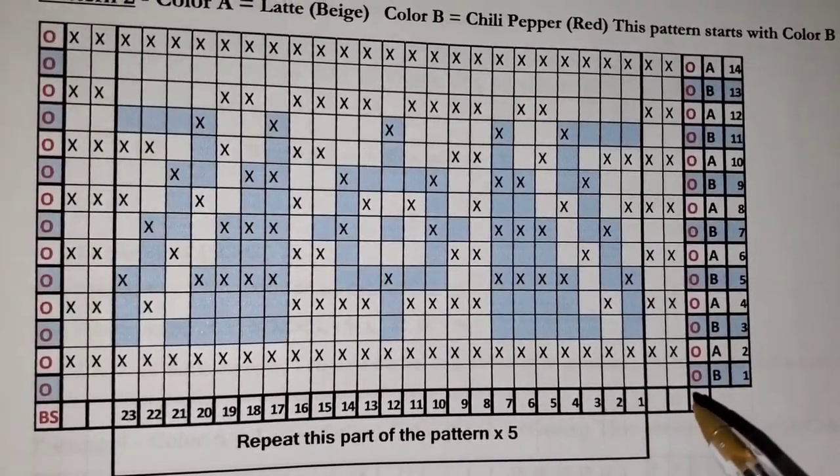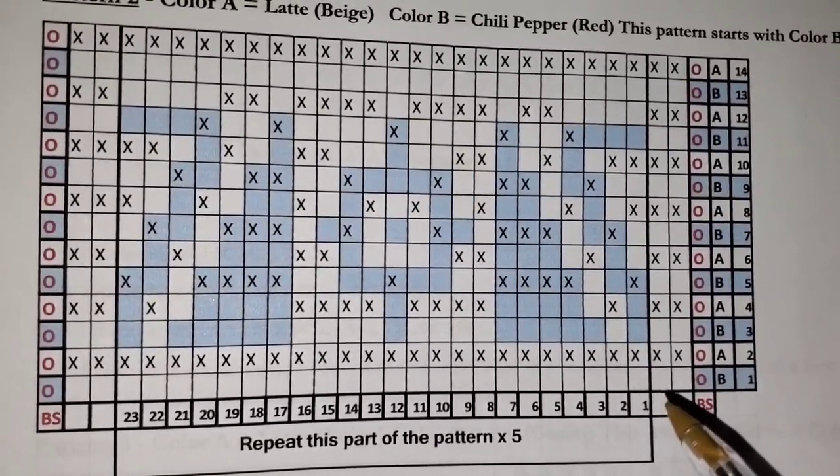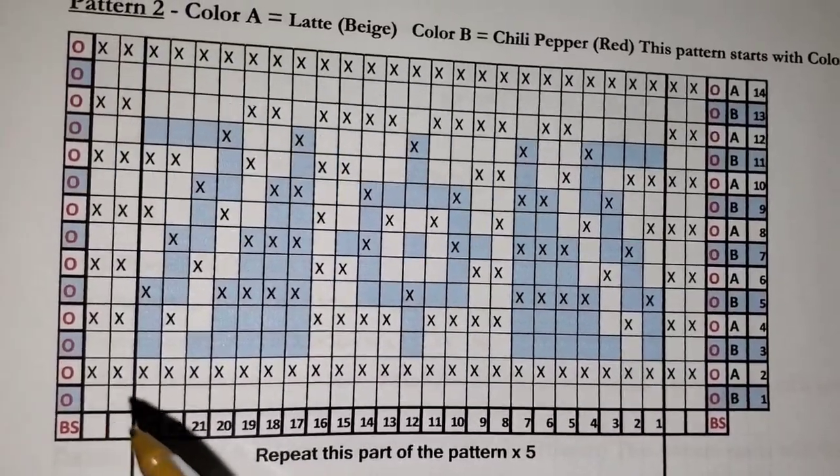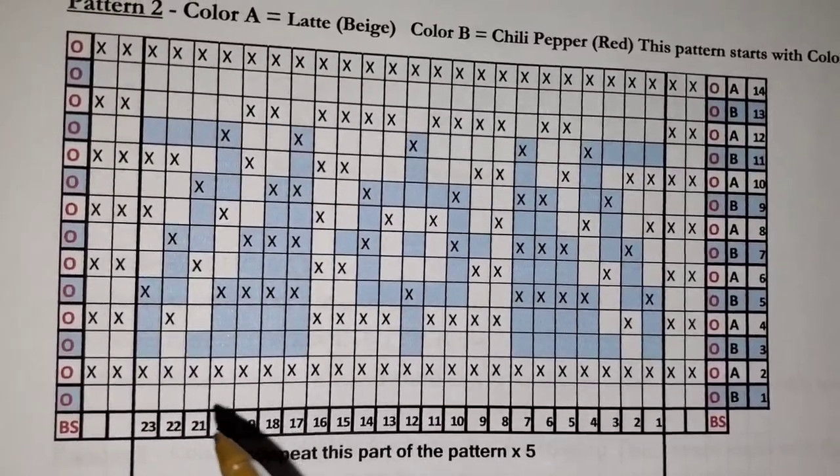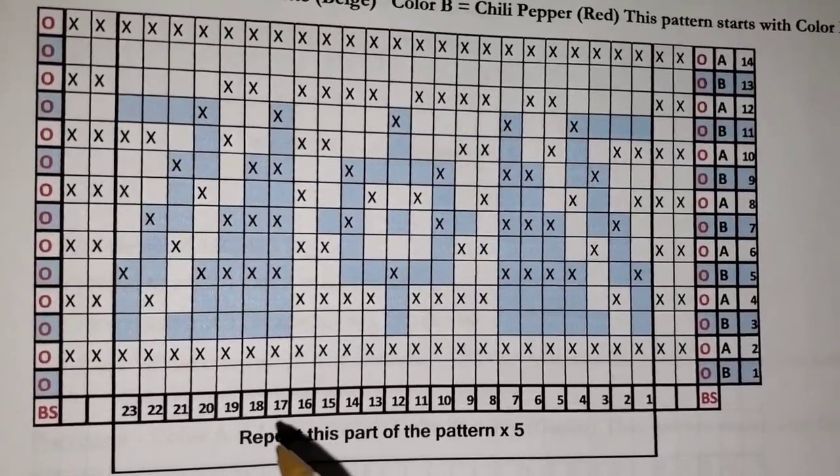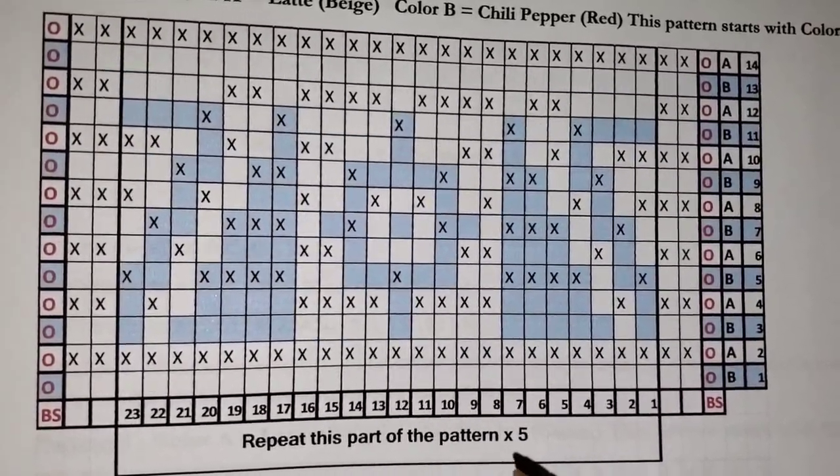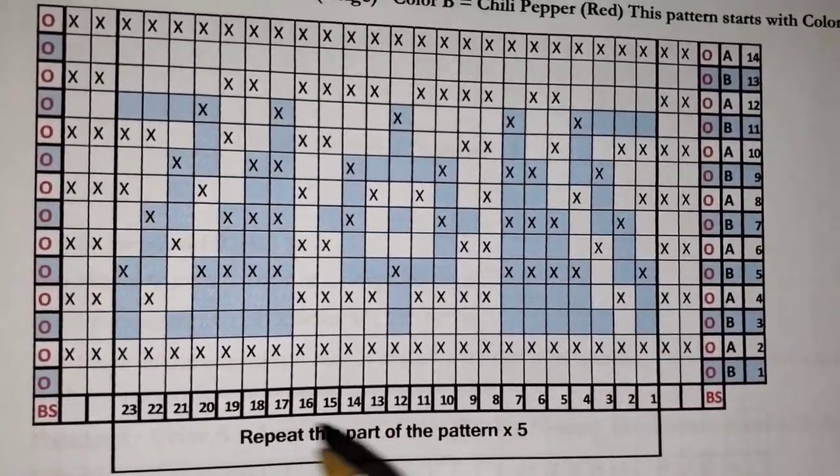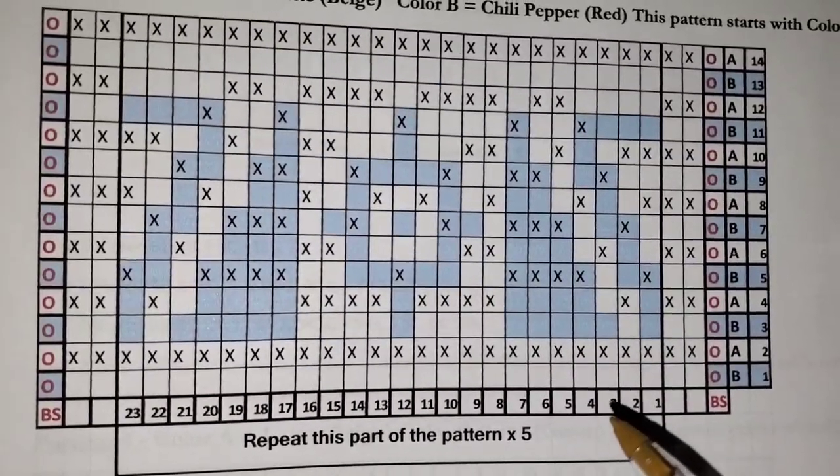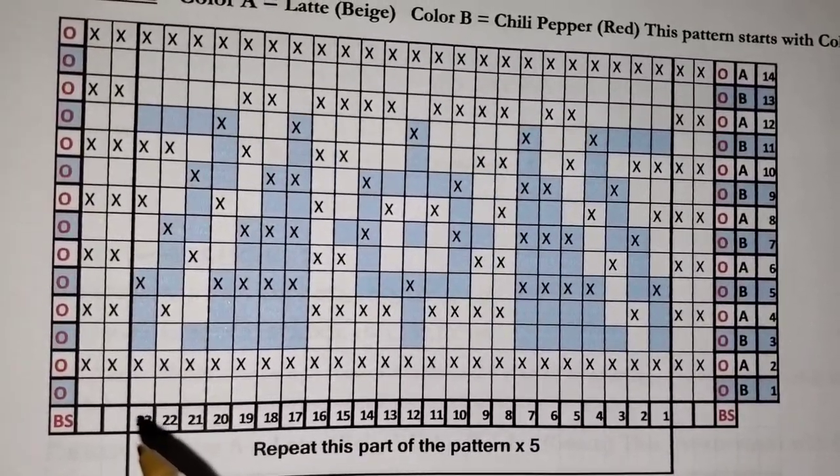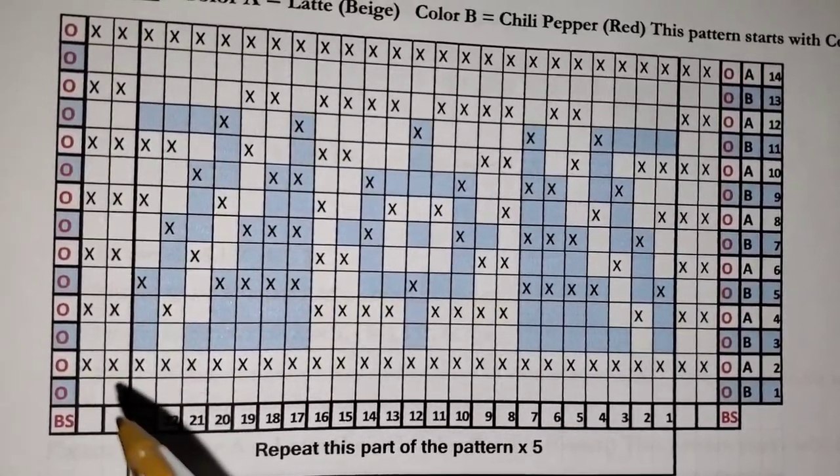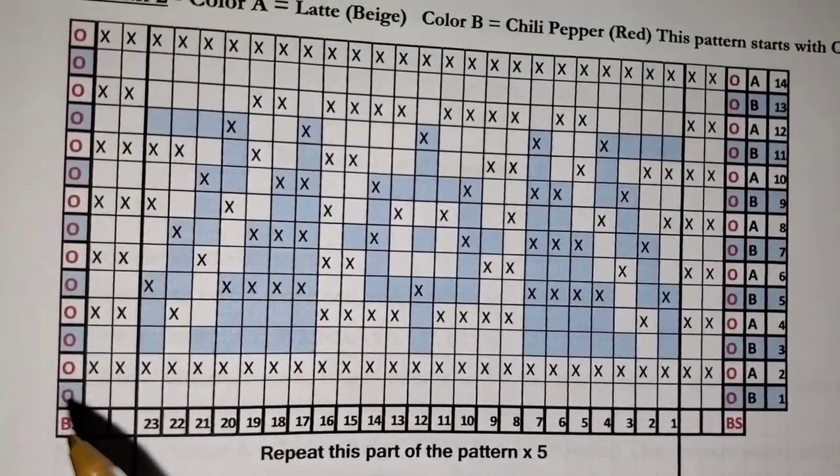When you're working your first row here, you do a border stitch, two single crochet stitches, one, two, and then we start on our pattern stitches, one through 23, they're all single crochet stitches. And we repeat that five times. So you see this part right here, it says repeat this part of the pattern times five. So you get to your 23rd stitch, you're going to repeat it again, then you go back to stitch one and repeat it again, and you do that five times. After your fifth repeat, then you would end with a single crochet, single crochet, and a border stitch.